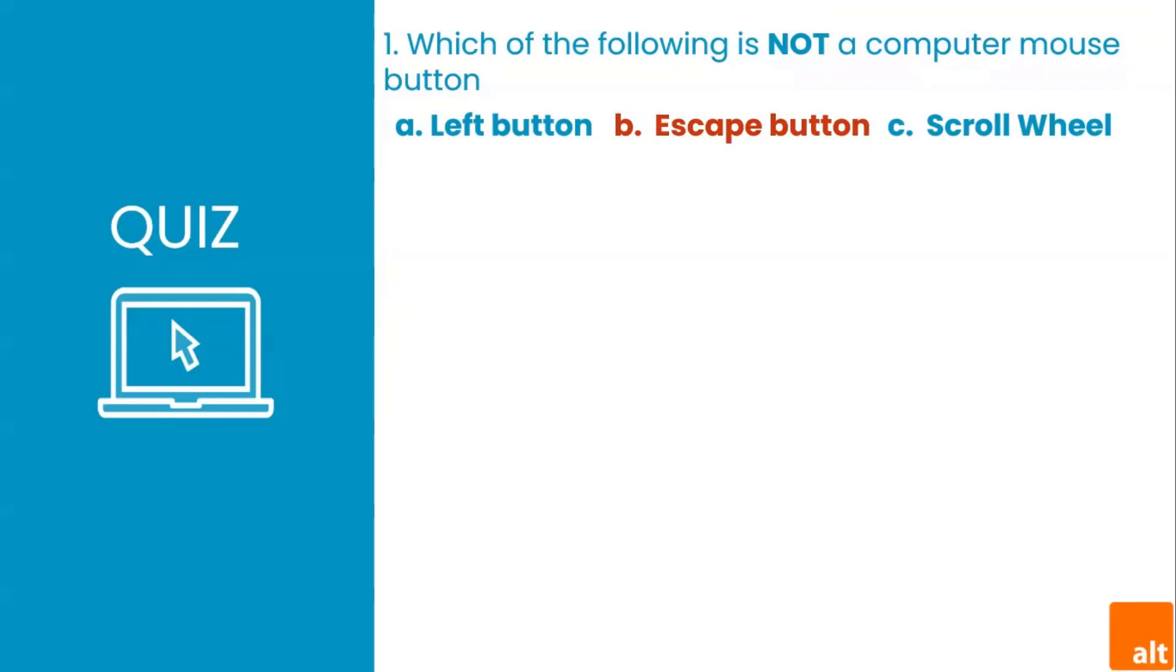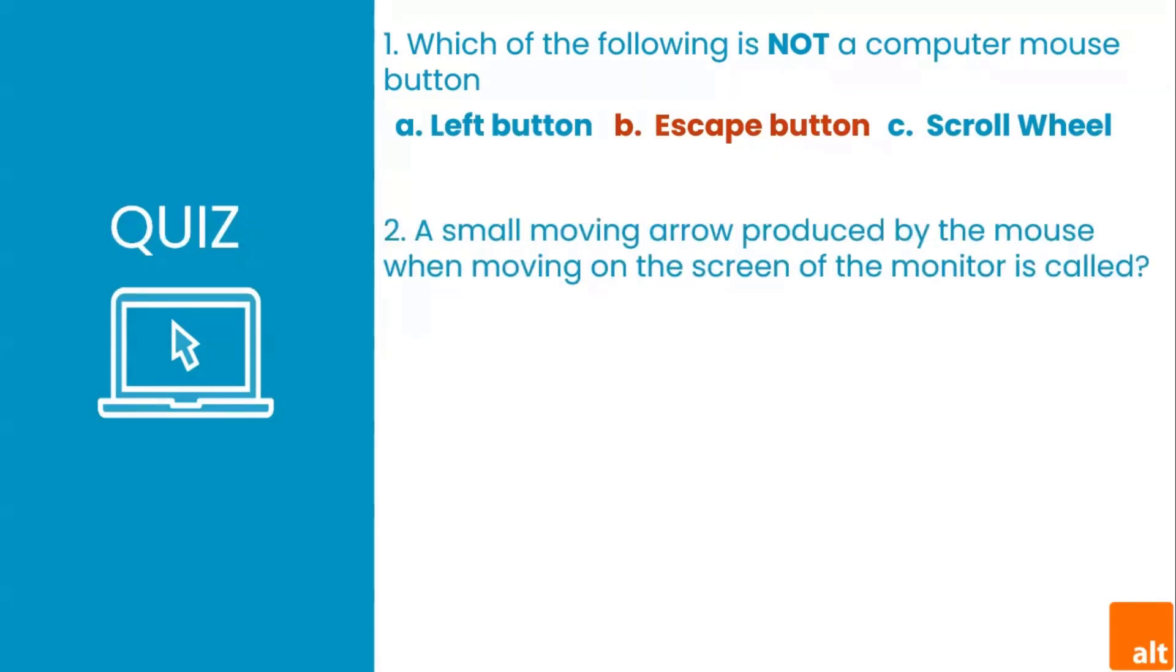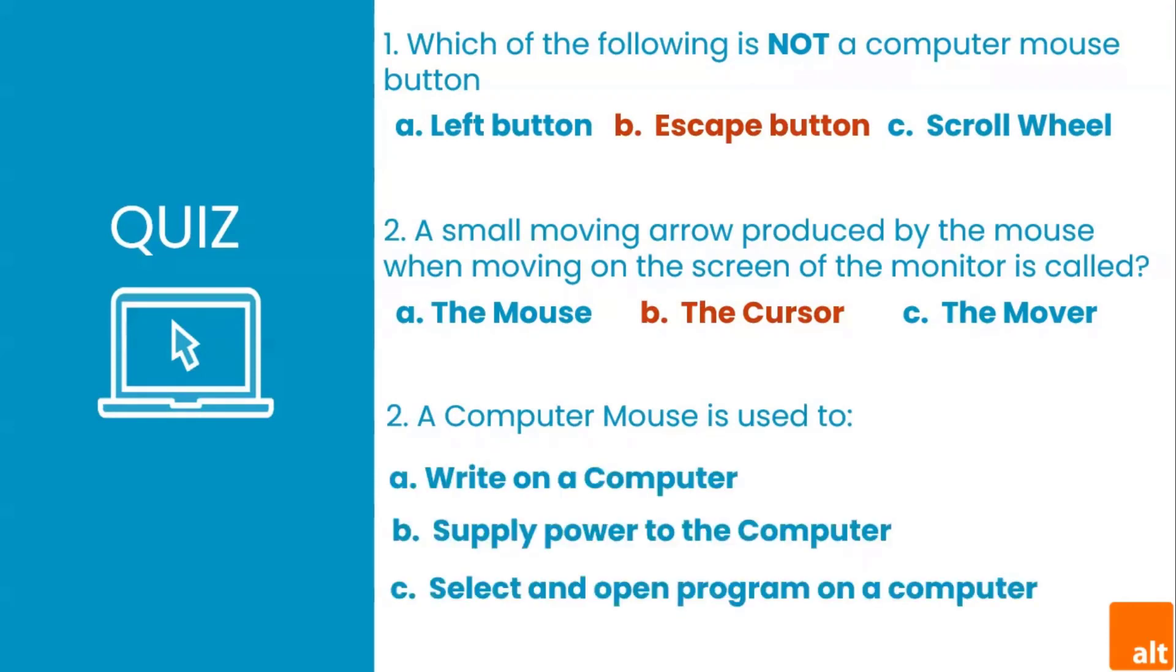Which of the following is not a computer mouse button? You guessed right! Unlike the left button and the scroll wheel, the Escape button is actually a button on the keyboard. A small moving arrow produced by the mouse when moving on the screen of the monitor is called what? You guessed right: the cursor. It's a small pointer or arrow that moves around on a desktop when you're navigating with your mouse. A computer mouse is used to do what? You guessed right! That's the primary purpose of a computer mouse: to select and open programs on a computer, especially with the double-clicking technique.